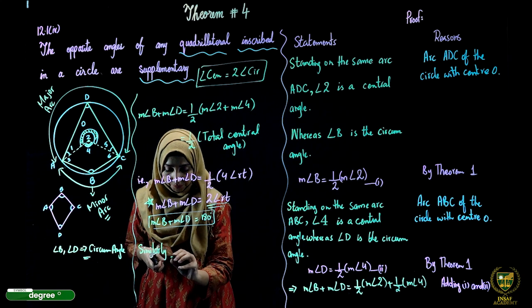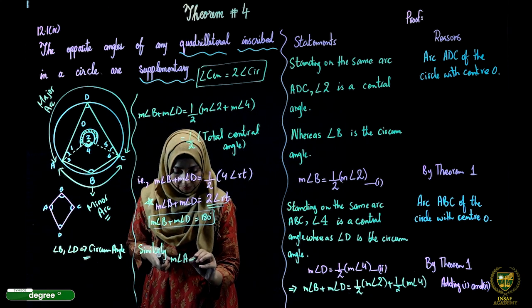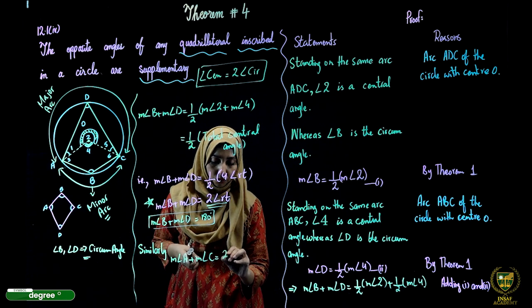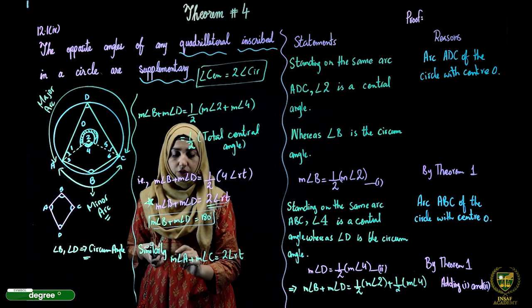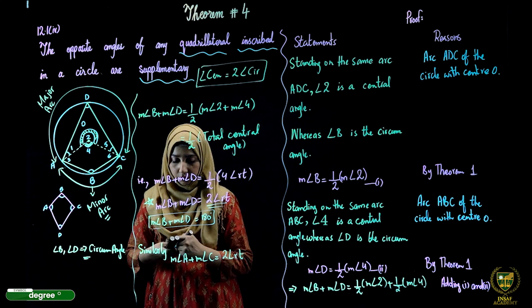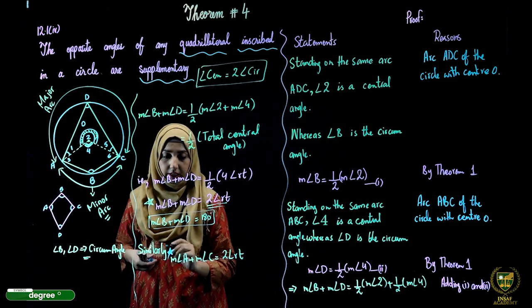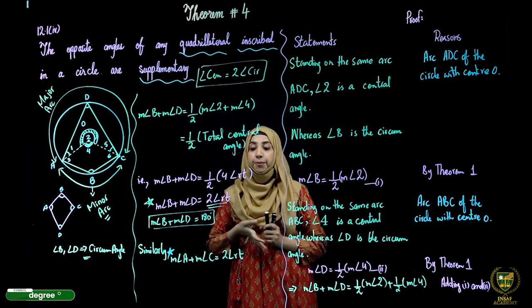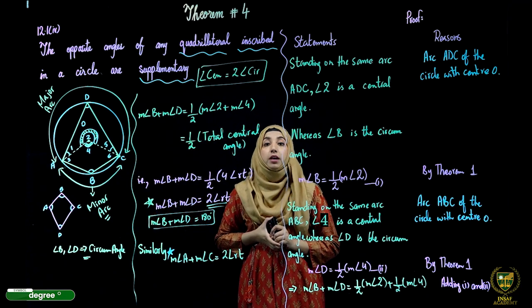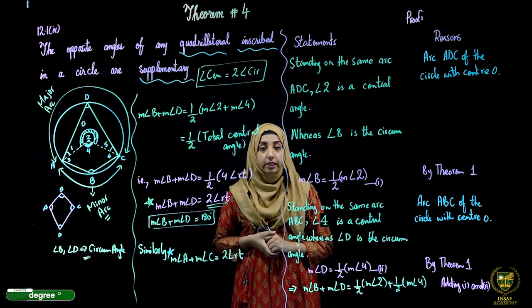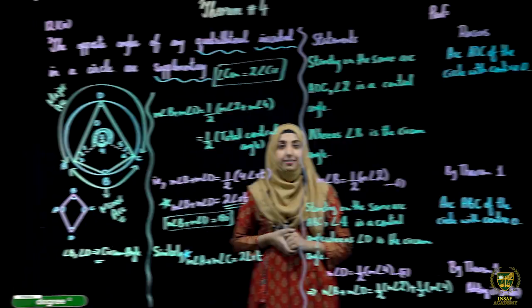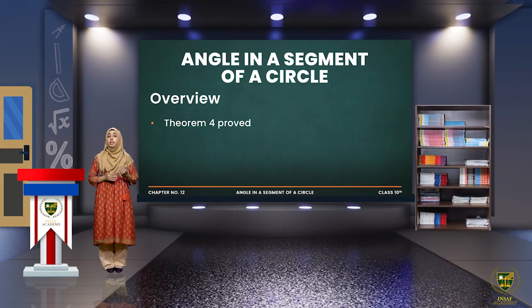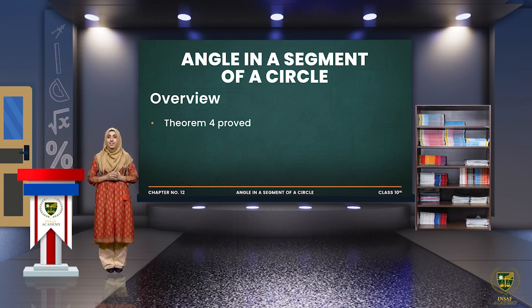Similarly, we can write: major angle A plus major angle C equals 2 right angles, i.e., 180 degrees. This proves the second condition. Hence both pairs of opposite angles of a quadrilateral inscribed in a circle are supplementary. I hope you understood. See you in the next lecture. Take care. Allah Hafiz!